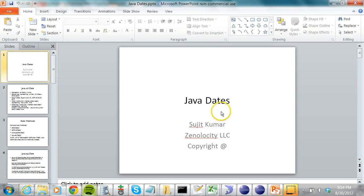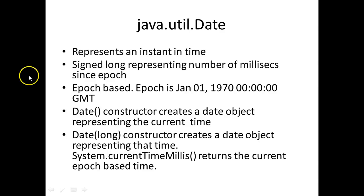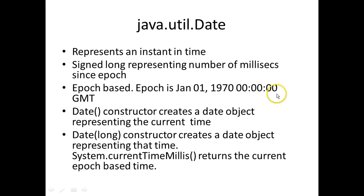In this class we'll see how dates work in Java. A Date object represents an instant in time. When you create a new Date object it generally represents the current date and current time. Java dates are epoch-based — epoch is January 1, 1970, midnight, zero hours zero minutes and zero seconds.